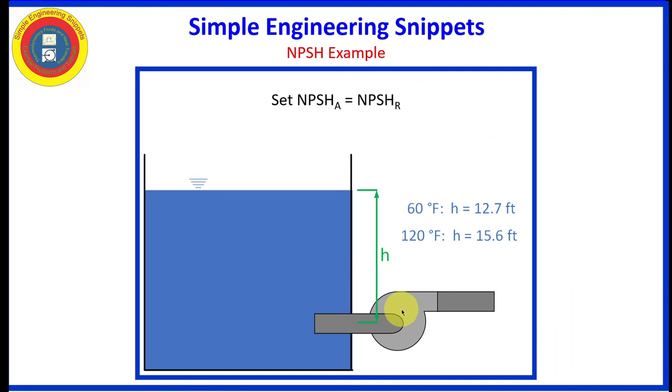So here is the final answer showing the new orientation of the pump that would be required. If it's 60 degree water, it needs to be 12.7 feet beneath the surface. And if it was 120 degrees Fahrenheit, it would need to be 15.6 feet beneath the surface. So I hope that was a good review and helpful. If so, please like and subscribe. Have a great day.